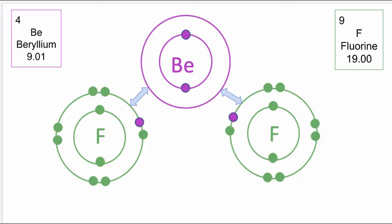One beryllium atom needs to give away two electrons, and in order to do that, it needs two fluorine atoms. That means that the formula for beryllium fluoride is BeF2.